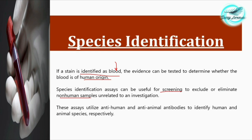Species identification assays can be useful for screening to exclude or eliminate non-human samples. If we encounter a blood stain which is not of human origin and is of no significance to the investigation, we can eliminate that sample as unrelated. Alternatively, if the non-human sample is of significance, we can confirm that a particular animal or organism is involved in the criminal case, pointing our investigation in a new direction.